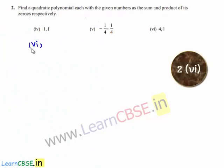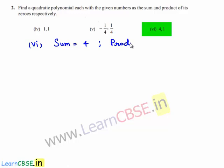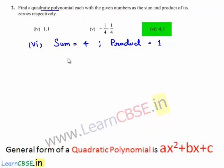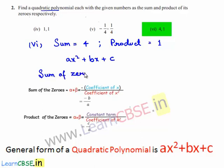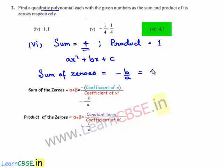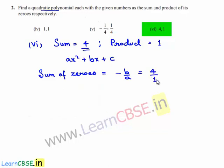Coming to the sixth bit, the given sum of the zeros is 4 and the product of the zeros is equal to 1. Let us assume the required quadratic polynomial to be ax² + bx + c. We know that the sum of zeros is equal to -b/a, and the given sum is 4, which can be written as 4/1. By comparison, -b = 4, so b = -4, and a = 1.